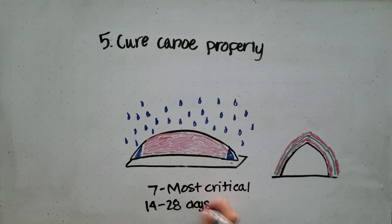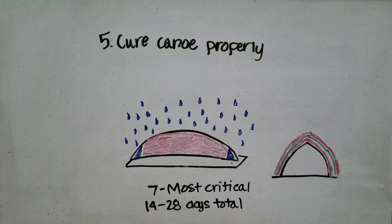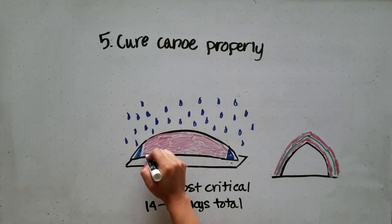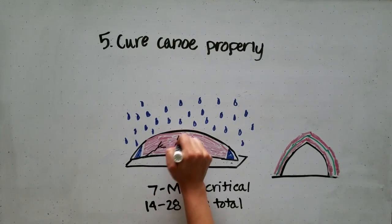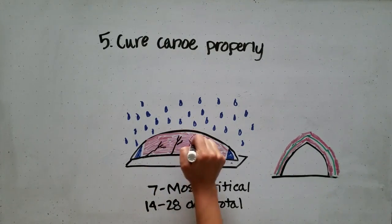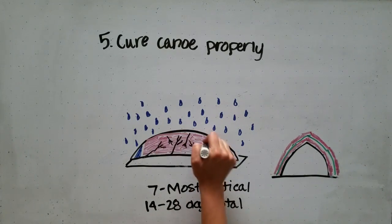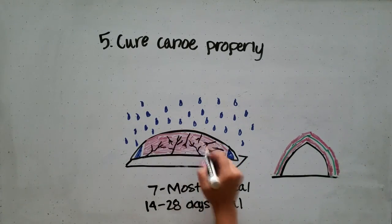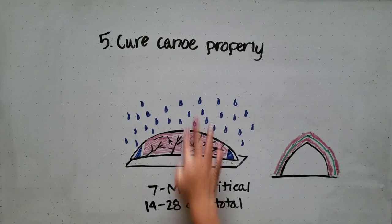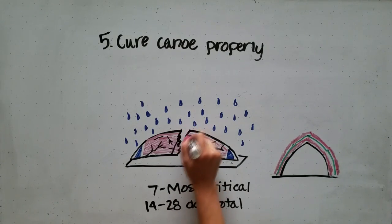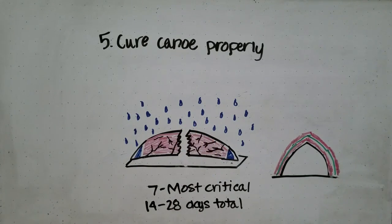The concrete overall should be cured for about 14 to 28 days to gain all of its strength before you remove the mold. If you're not careful with the curing process, the concrete can shrink and crack quite a bit as it tries to hydrate, which can lead to complete failure of your concrete canoe.